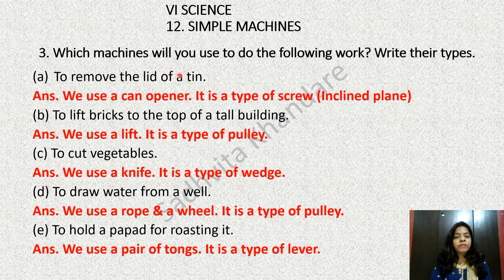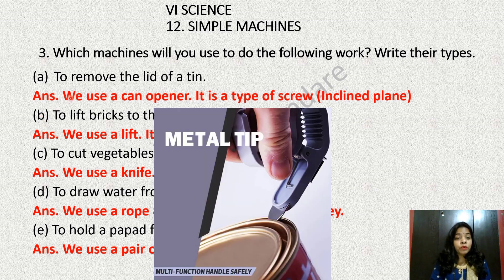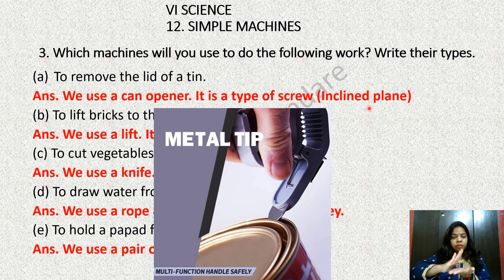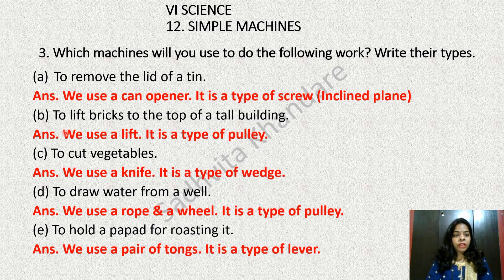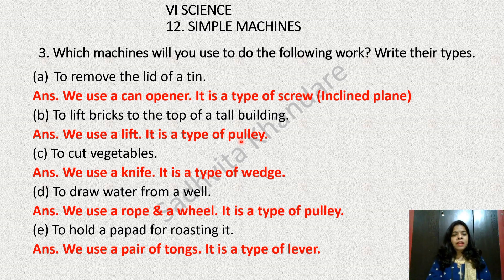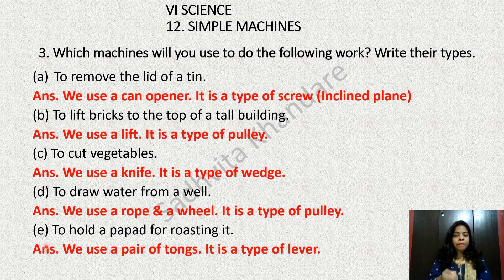Next question: which machines will you use to do the following work? To remove the lid of a tin, we use a can opener — it is a type of screw and an inclined plane. To lift bricks to the top of a tall building, we use a lift, which is a type of pulley. To cut vegetables, we use a knife — it is a type of wedge. To draw water from a well, we use a rope and a wheel — it is a type of pulley. To hold a puppet for roasting, we use a pair of tongs — it is a type of lever.